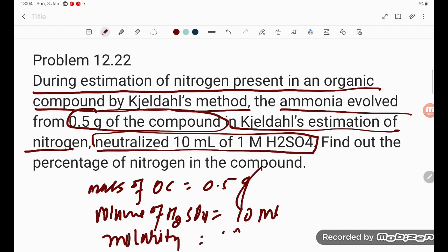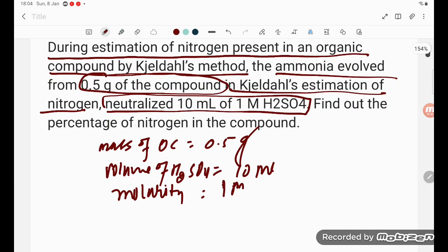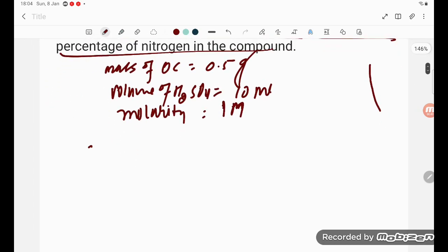They have given 1 molar. This is 1 molar. Find the percentage of nitrogen. The percentage nitrogen formula is equal to 1.4 multiplied by...